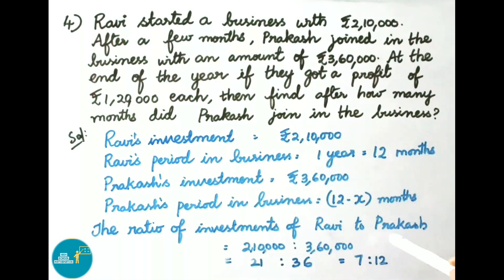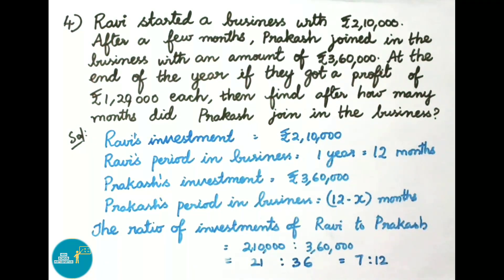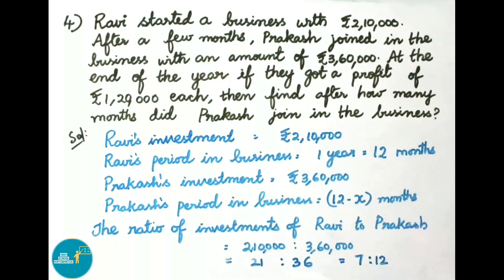The ratio of investment of Ravi to Prakash is 2,10,000 to 3,60,000. Dividing both terms by 10,000 we get 21 is to 36. Again dividing both terms by 3, the ratio is 7 is to 12.